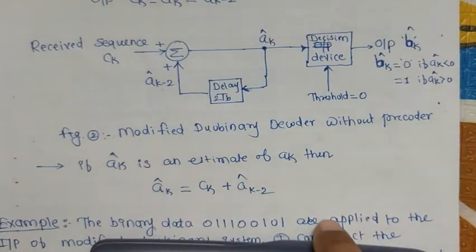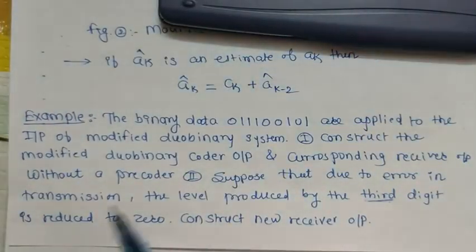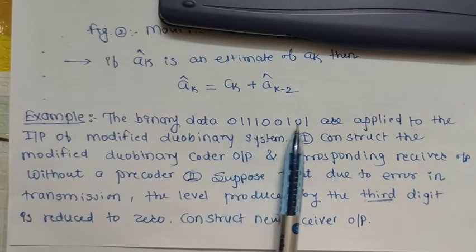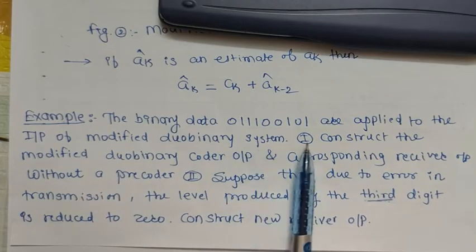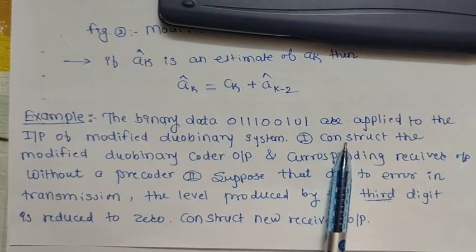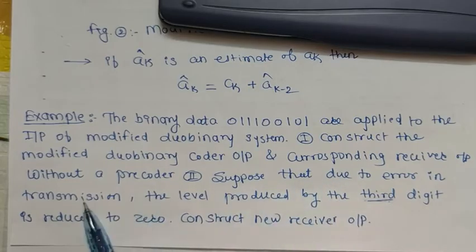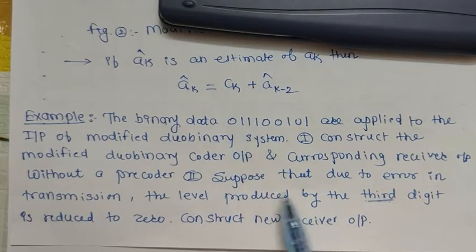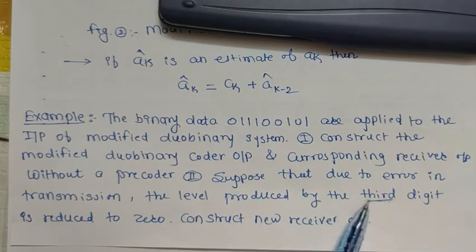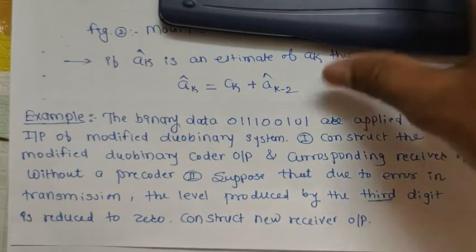Now let us look at an example of the modified duo binary encoder without pre-coder. The binary data is: 0, 1, 1, 1, 0, 0, 1, 0, 1, applied to the input. Question one: construct the modified duo binary encoder output and corresponding receiver output without pre-coder. Question two: suppose that due to a transmission error the level produced by the third digit is reduced to zero — construct the new receiver output.